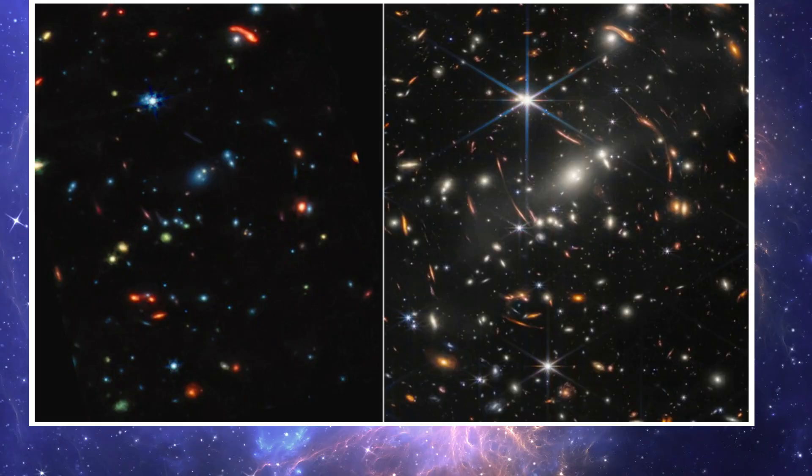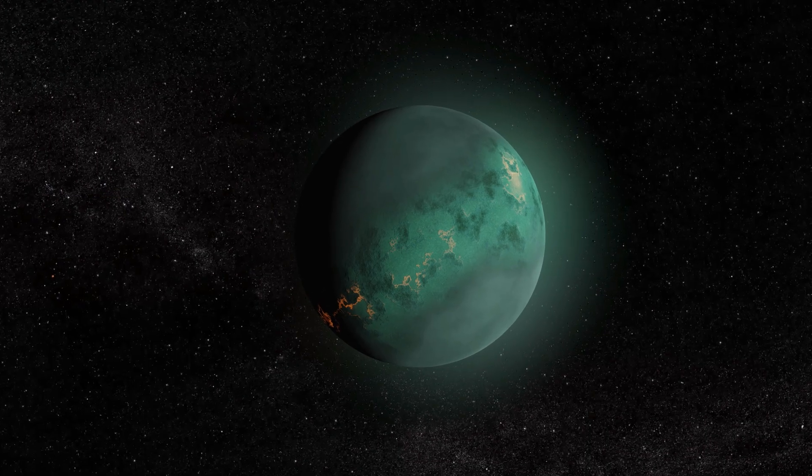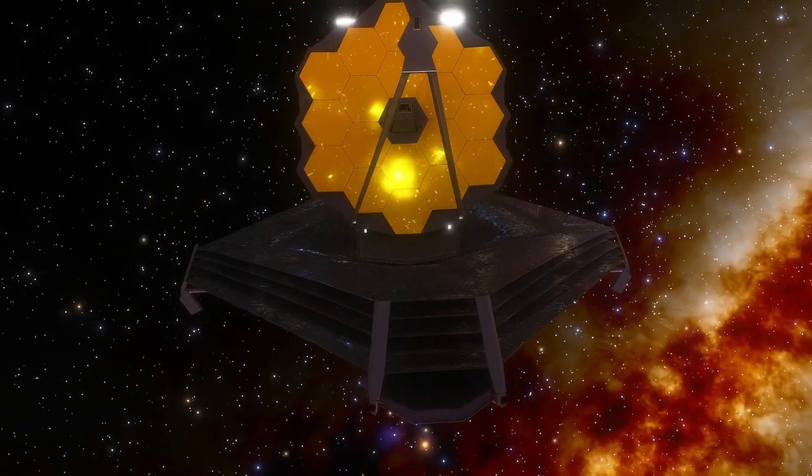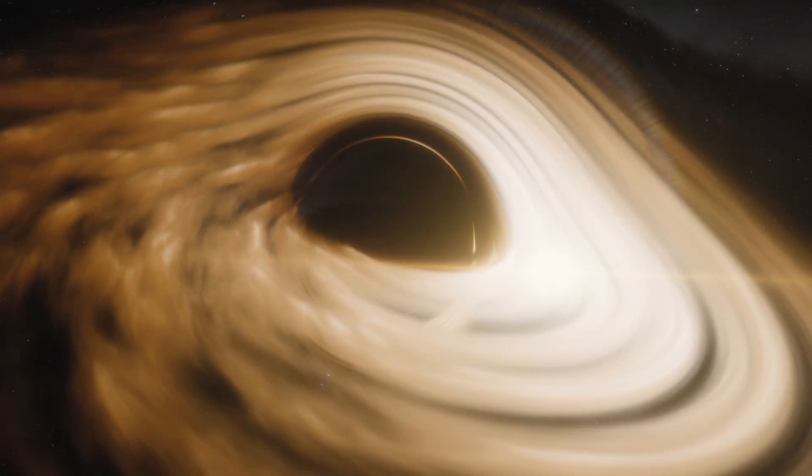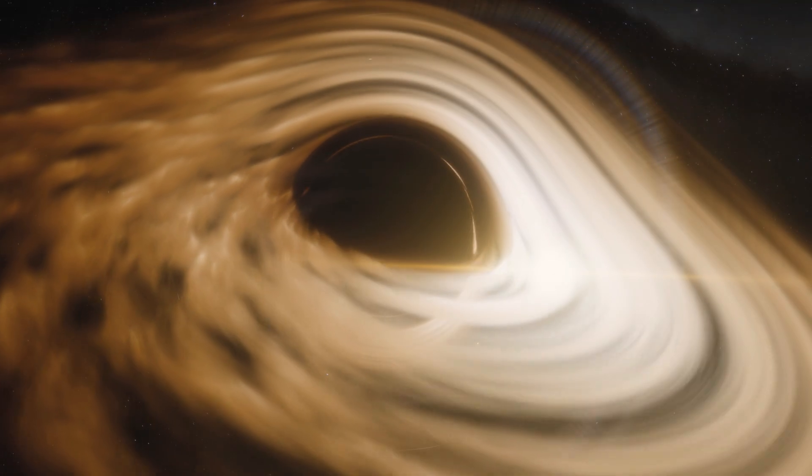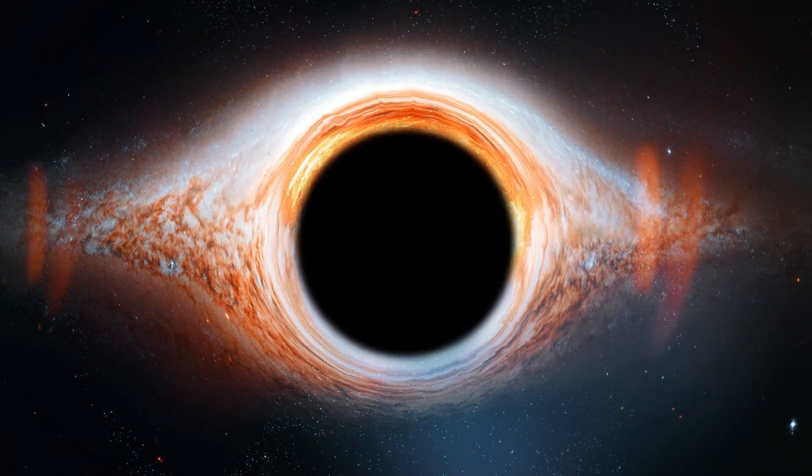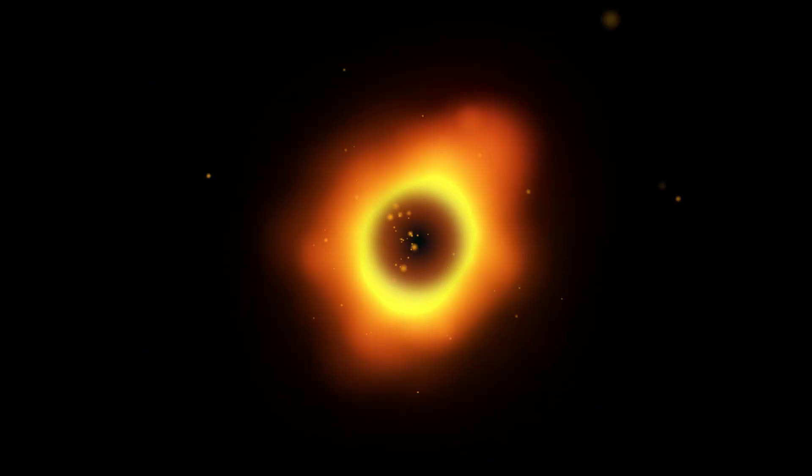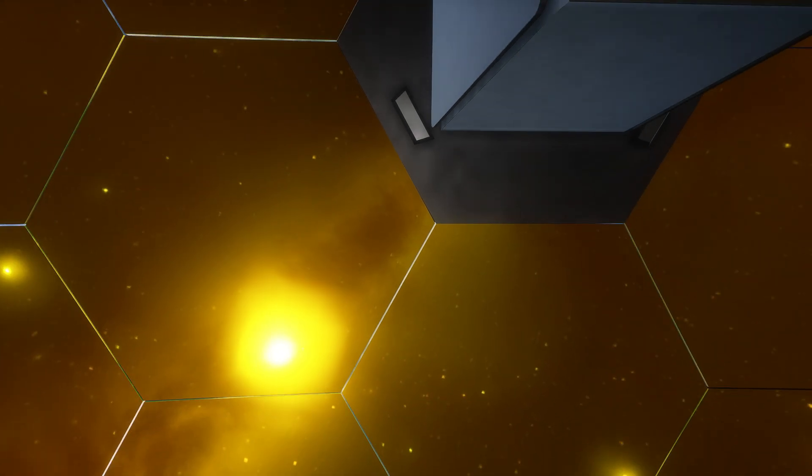From galaxies so ancient they shouldn't even exist, to the faint chemical whispers of life on distant worlds, the James Webb Space Telescope has shown us wonders we never dreamed possible. It has peeled back the veil on newborn stars, revealed colossal black holes at the dawn of time, and even uncovered a strange new mystery. Objects that aren't quite galaxies, and not quite black holes either. A candidate for an entirely new class of cosmic being. The so-called Black Hole Star. So let's dive into all of this, and more.